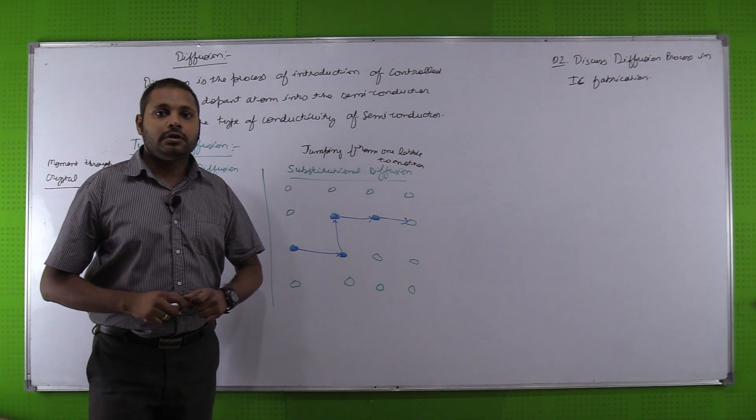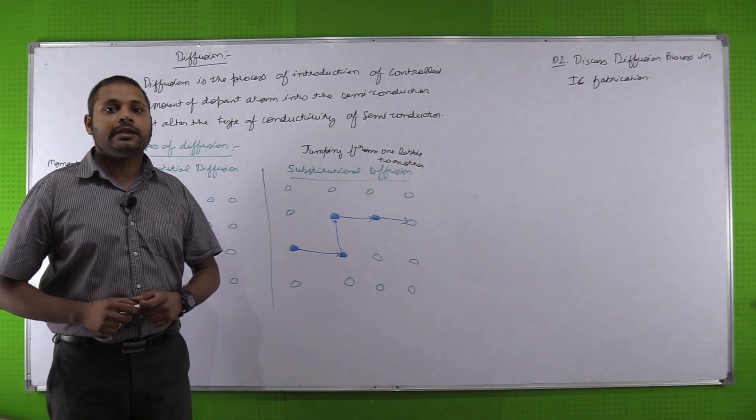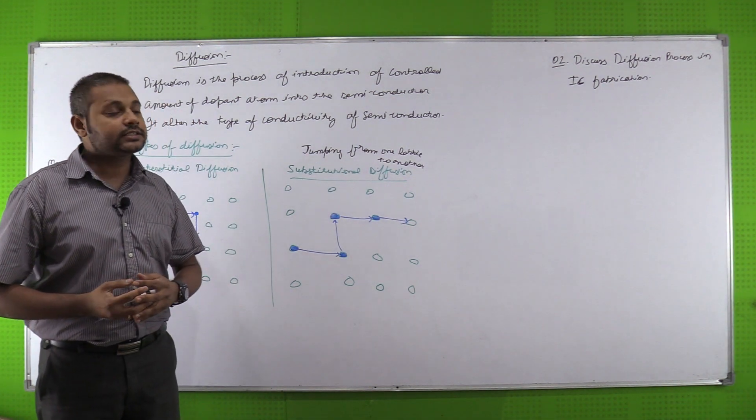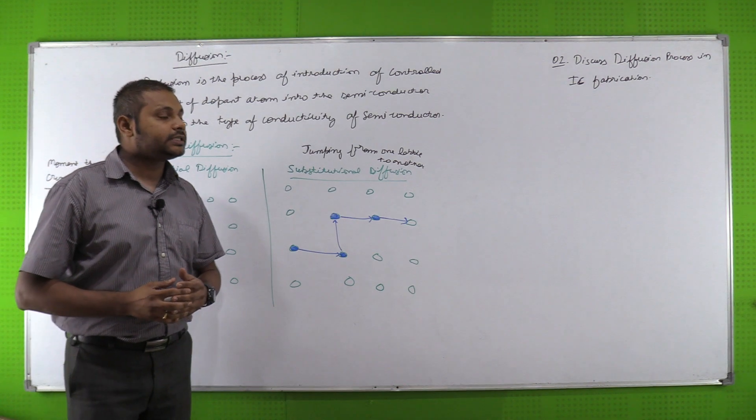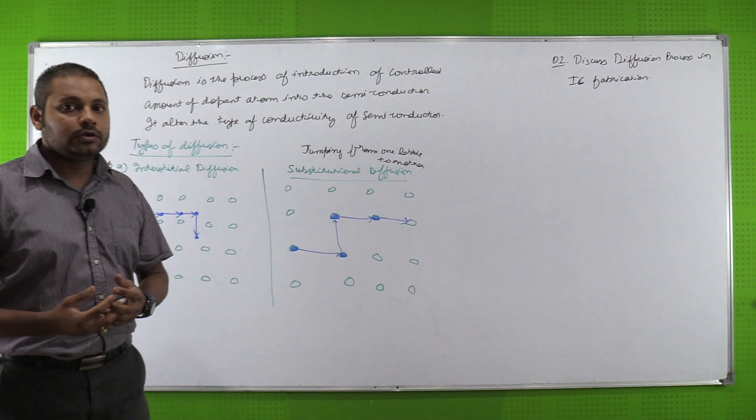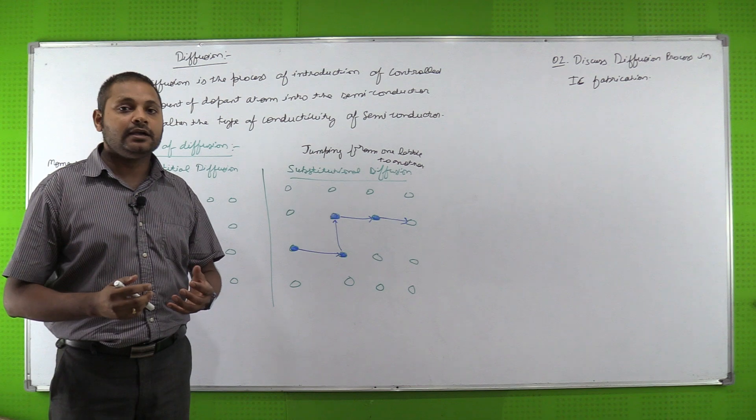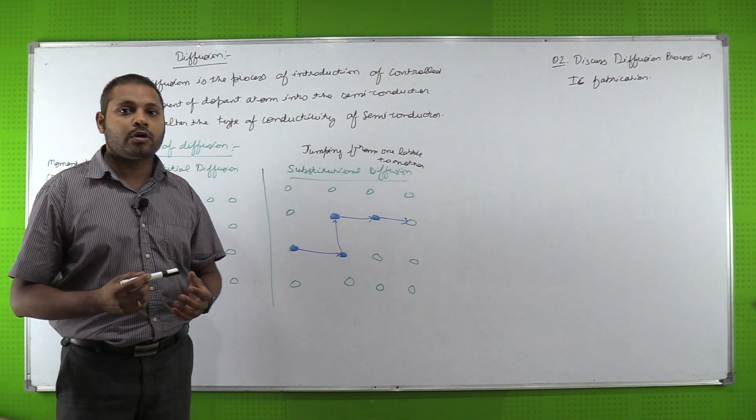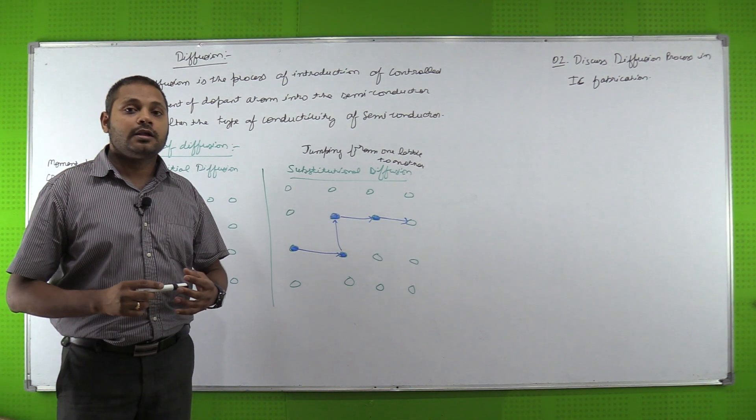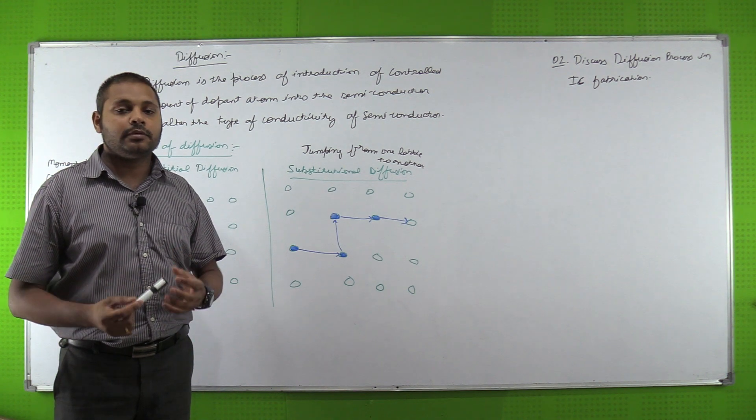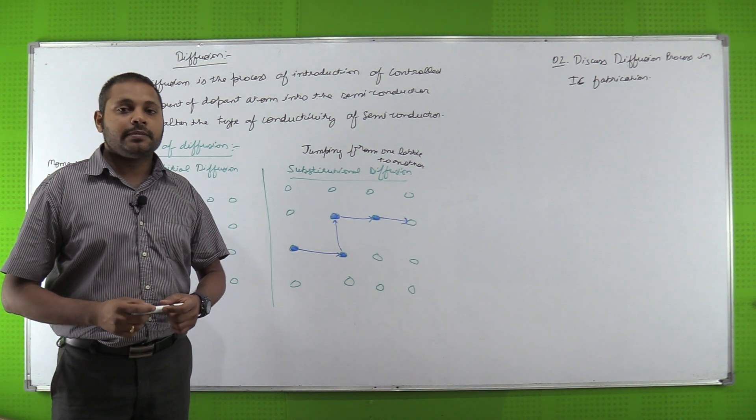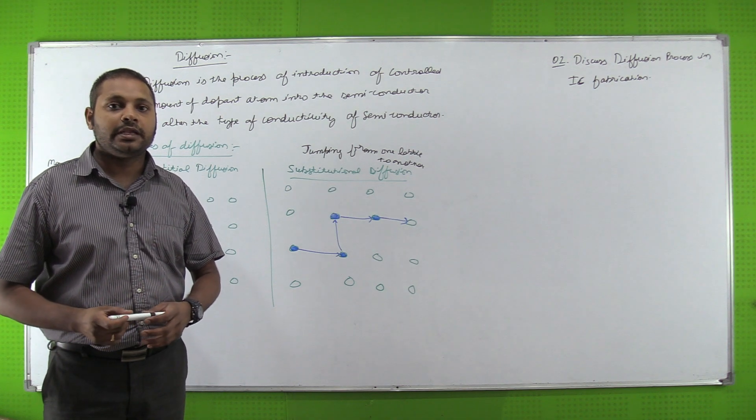Okay friends, moving on to question number two that is related to IC fabrication process. The next process is the diffusion process. Diffusion in IC fabrication is nothing but adding a dopant or adding an impurity inside the semiconductor. Now the question is how does that impurity atom adjust into the semiconductor, that is silicon or germanium?